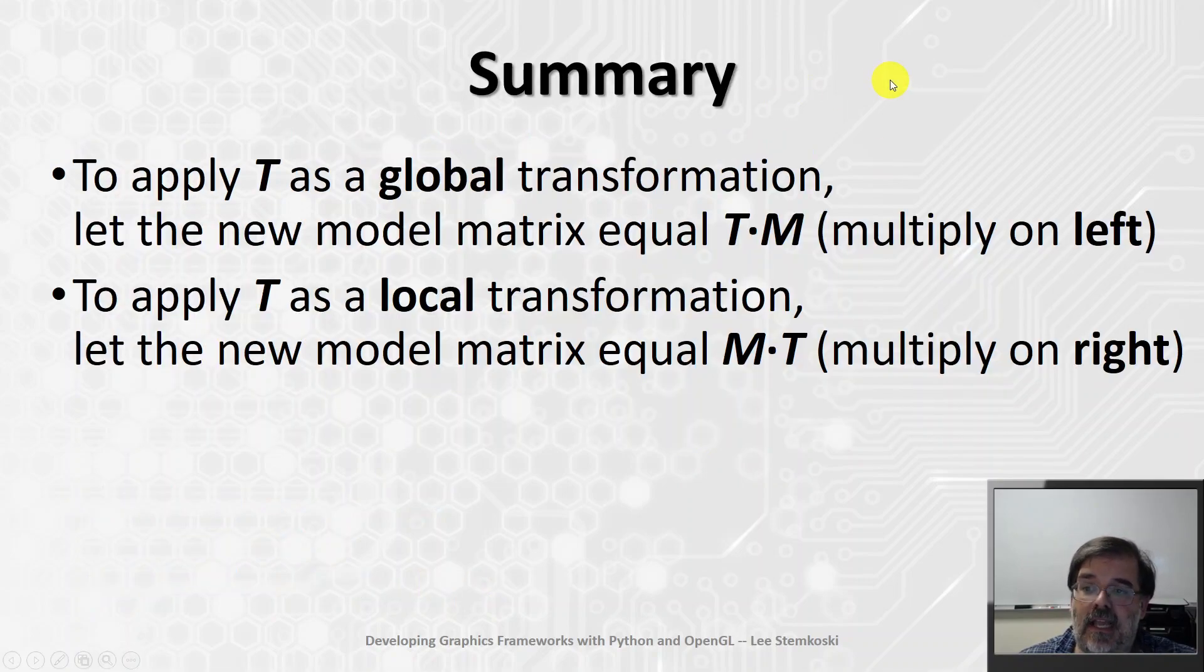I need to summarize it up. If you have some object, some geometric object, and it has a model matrix M, and you want to apply a geometric transformation T: if you want to apply it as a global transformation, this is something we already know, but including it for completeness, the new model matrix would be, take the original model matrix and multiply by T on the left. That would correspond to a global transformation T. But what we've learned in this video is if we want to apply a matrix as a local transformation, take the model matrix, multiply it by T on the right, and make that the new model matrix. And that's how you do local as compared to global transformations. It's all about the side on which you multiply the matrix.